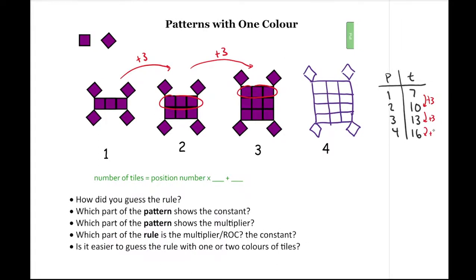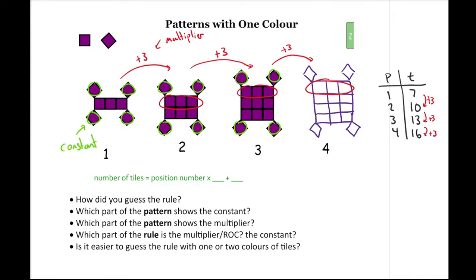So it's plus three, plus three — that's my multiplier. It's what my pattern's changing by every time. To figure out what our constant is, we need to figure out what's staying the same. In this case, we can see these four little squares on the ends — they're staying the same throughout. So that's our constant. The four squares, or four, is our constant. We could also figure that out from our table: if I find the output value at position zero, it tells me the constant.